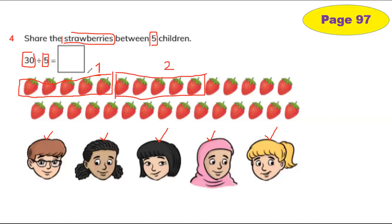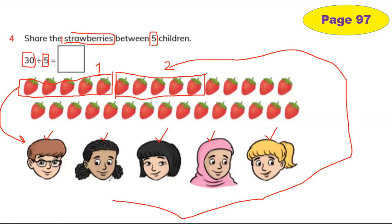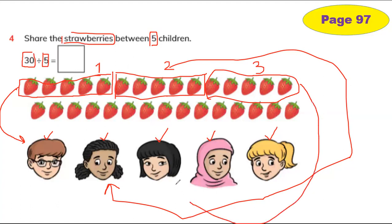So this is group one — these strawberries are for this boy. And this is the strawberries I'm going to draw for this girl. Next again: one, two, three, four, five — I'm going to draw one more group. This is group three, and this group will be shared with this girl. Now let's find the next: one, two, three, four, five — for the next two children.